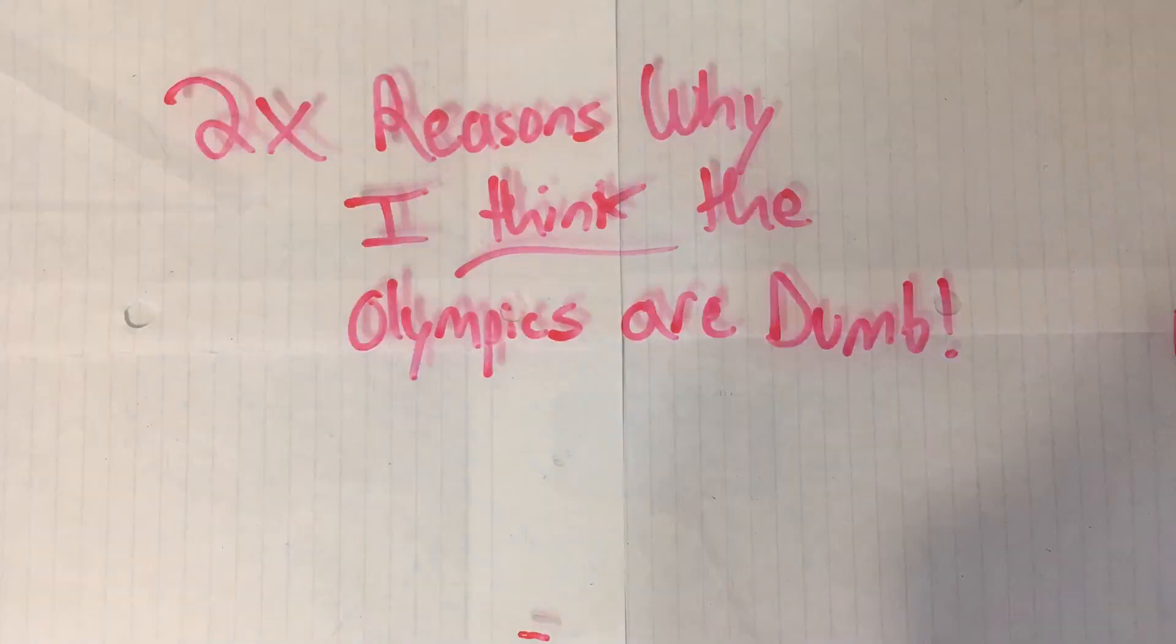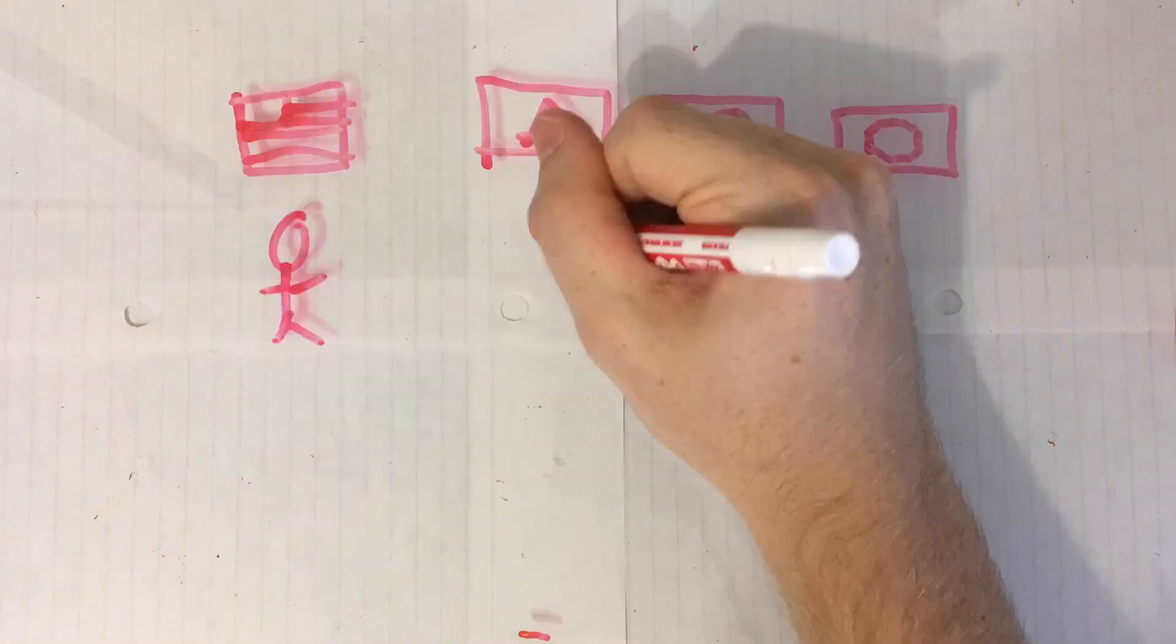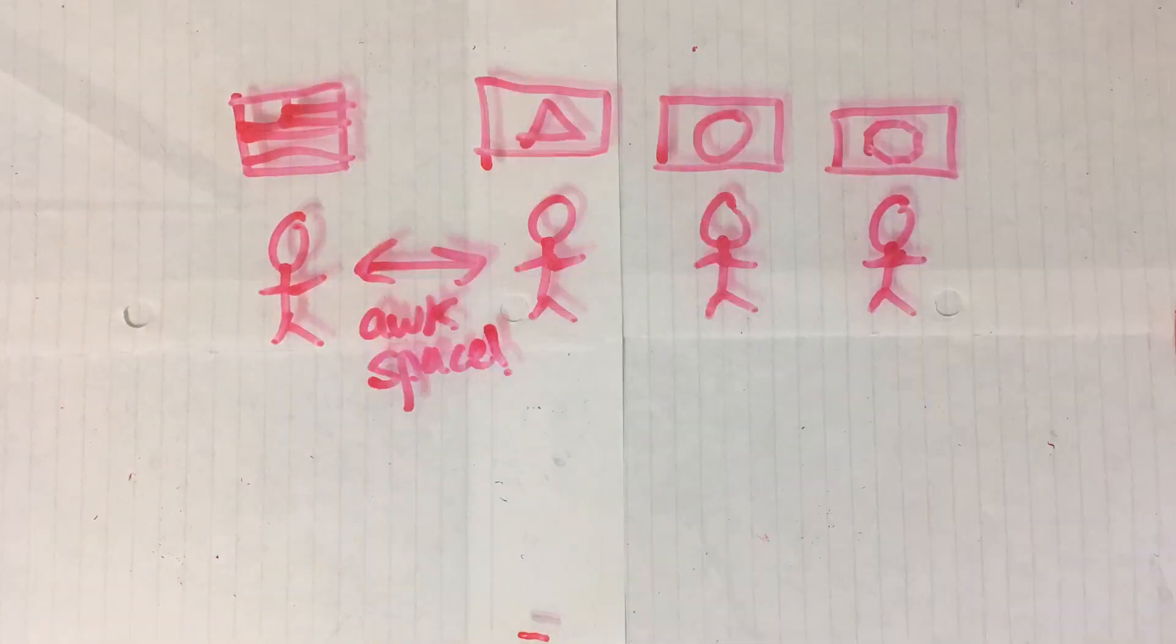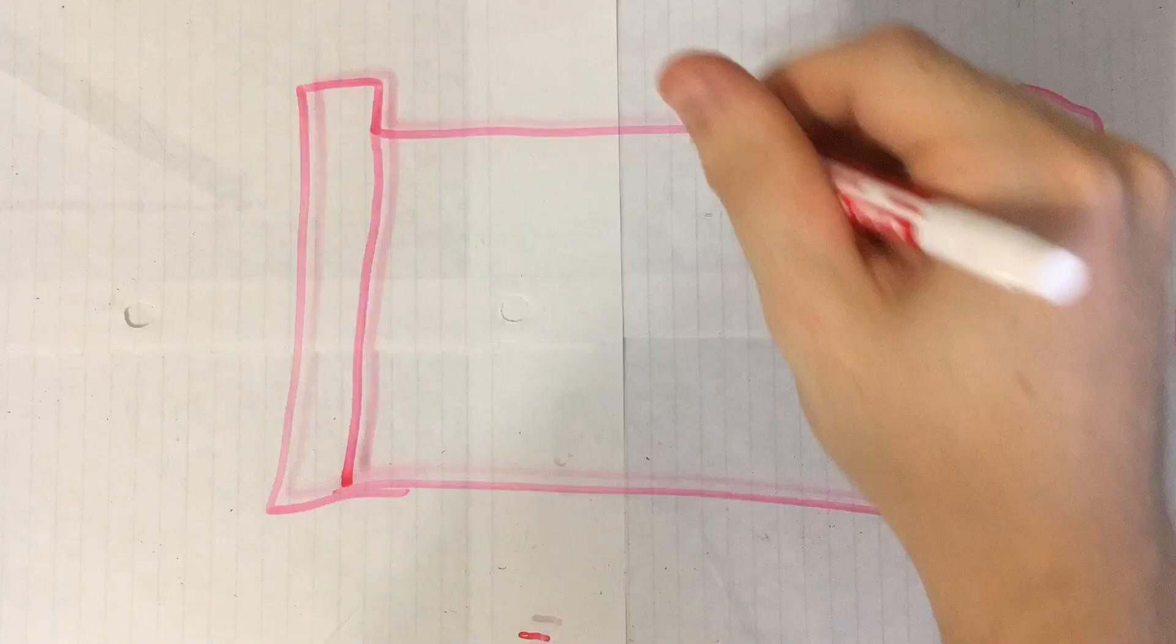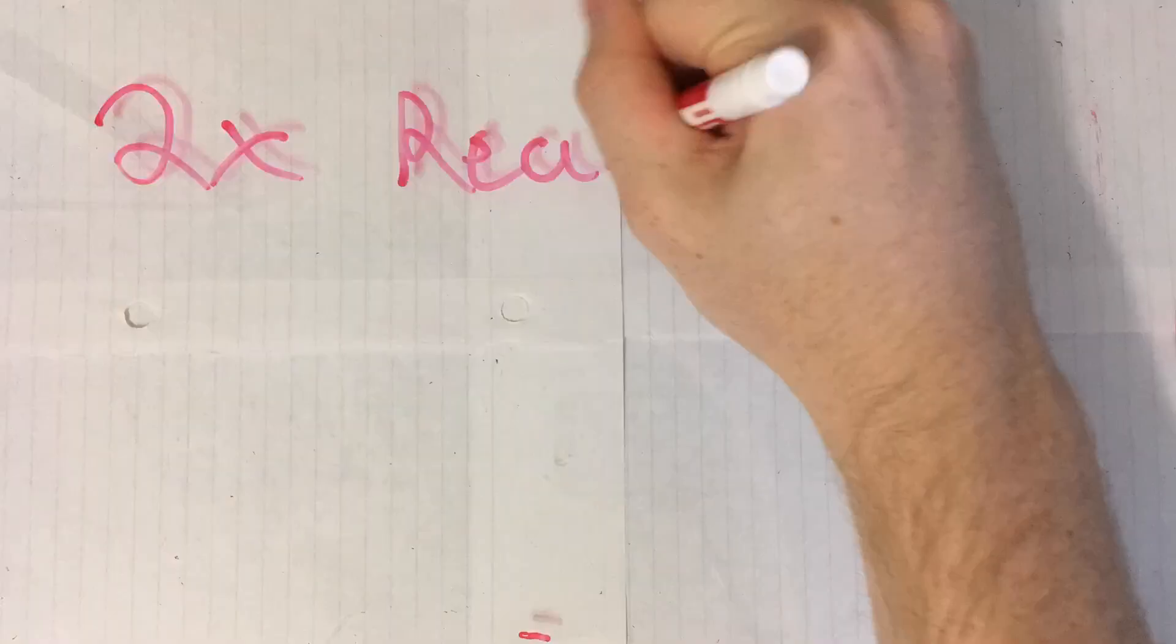Now, let me make this clear. I have nothing against sports in particular. Through the Olympics, countries can show off their best athletes in a competitive setting. But the way the Olympics are done is just not practical at all. Here are two reasons why I think the Olympics are dumb, or at least done in a dumb way.